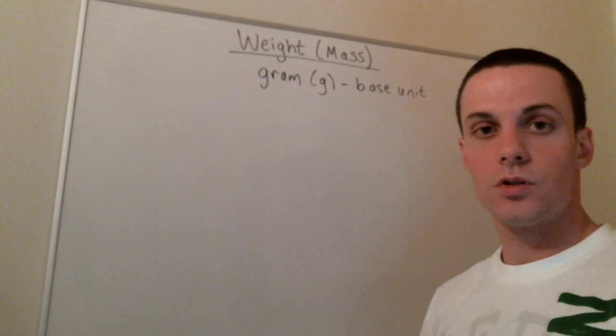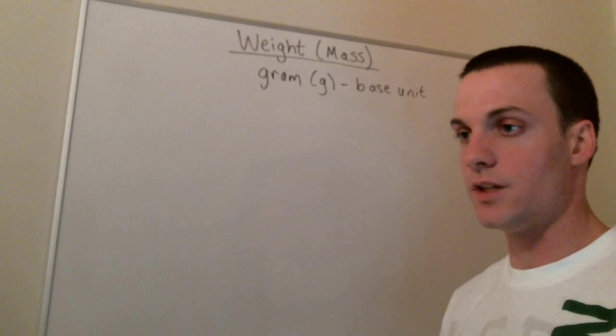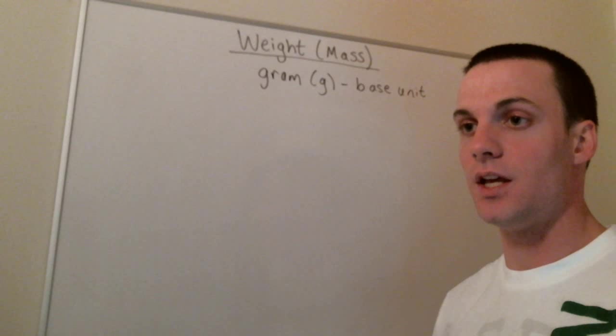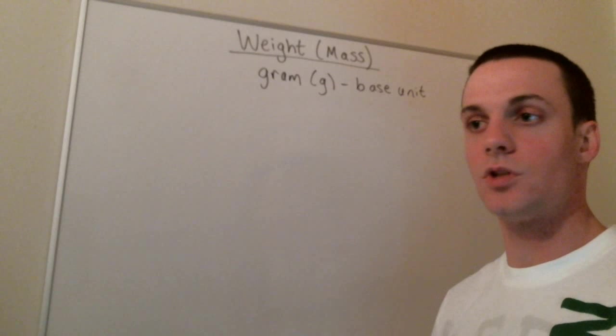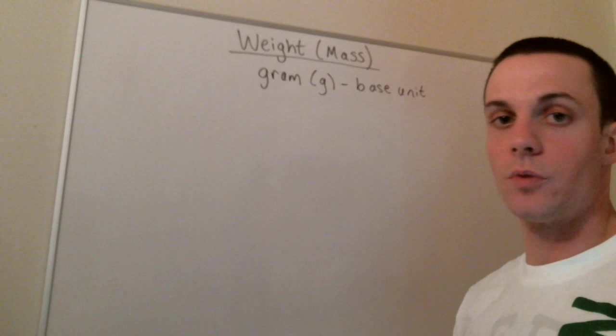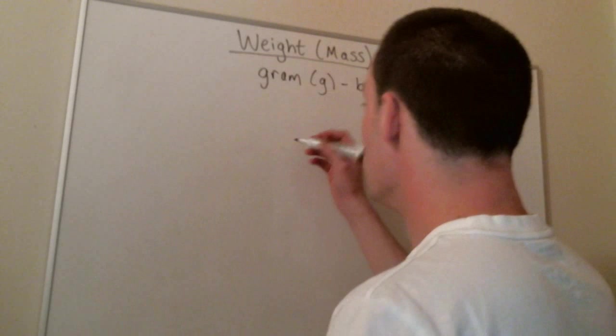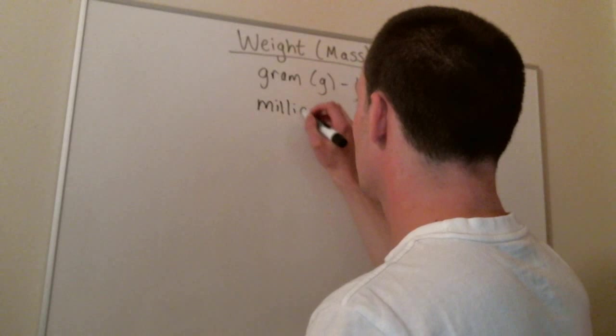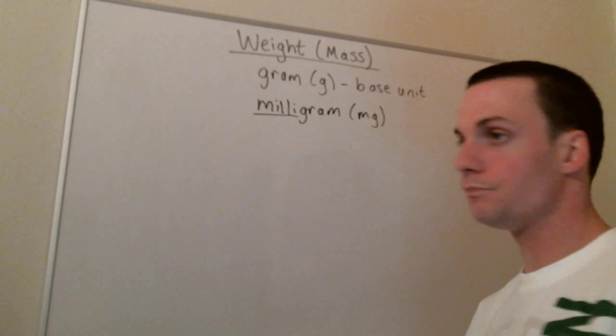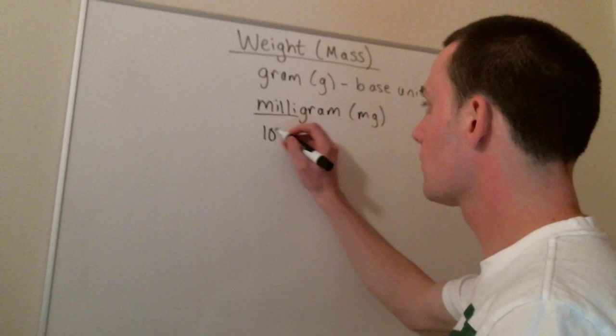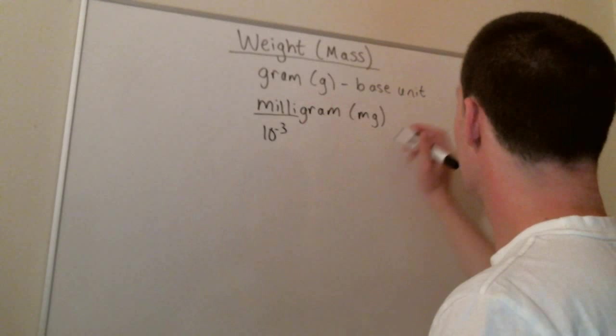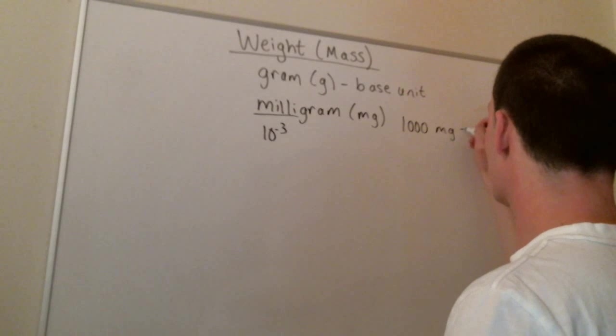Now a gram is too large in most pharmaceutical applications, especially accommodating the size of tablets and capsules. If tablets and capsules relied on medications to be in grams, they would be huge and people wouldn't take them. And so instead, most of our pharmaceutical formulations are actually measured in milligrams. Now the prefix milli in milligram means ten to the negative third. So this means that a milligram is one one-thousandth the size of a gram. So there's 1,000 milligrams in one gram.